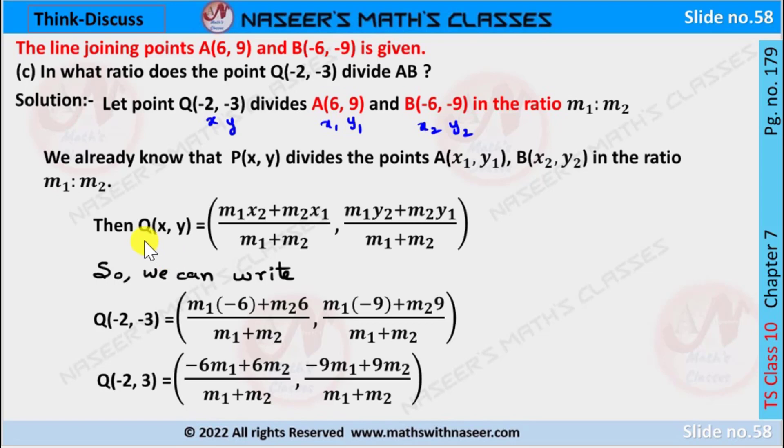Q(x,y) is equal to (m₁x₂ + m₂x₁)/(m₁ + m₂), (m₁y₂ + m₂y₁)/(m₁ + m₂). After substituting the values of x₁, y₁, x₂, y₂.